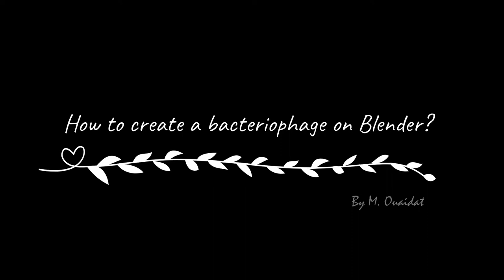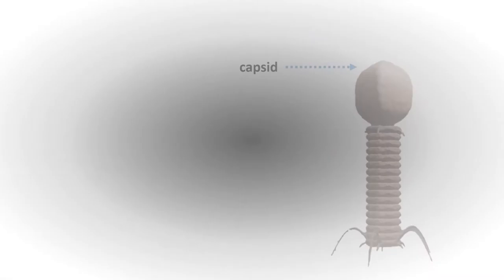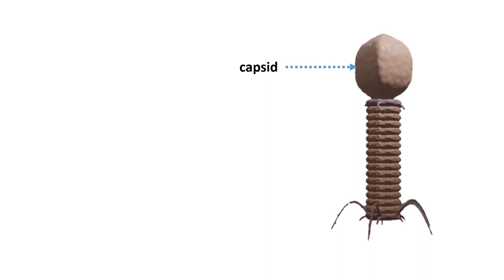Hi everyone, in this video I'm going to show you how to create a bacteriophage, the virus which infects bacteria. A bacteriophage is formed of a capsid head in which the genetic material is located, a collar, a sheath, and a base plate from which the spikes and the tail fibers emerge.